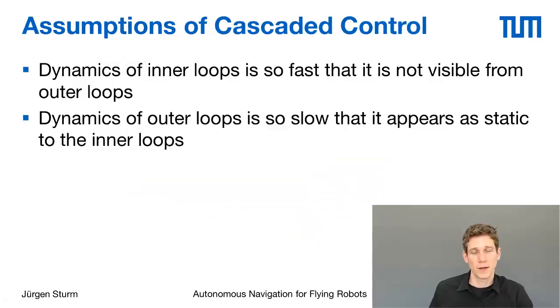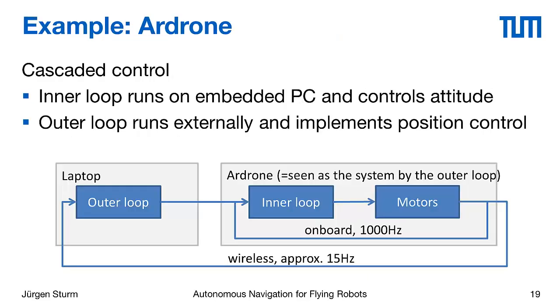It's important to note that you can just stack different controllers above each other. This is called cascaded control. This works well as long as the dynamics of the outer system are at least a magnitude slower than the dynamics of the internal system. For the internal controller the setpoint then appears to be static. And for the outer controller the dynamics of the internal system are so fast that it also appears to immediately converge.